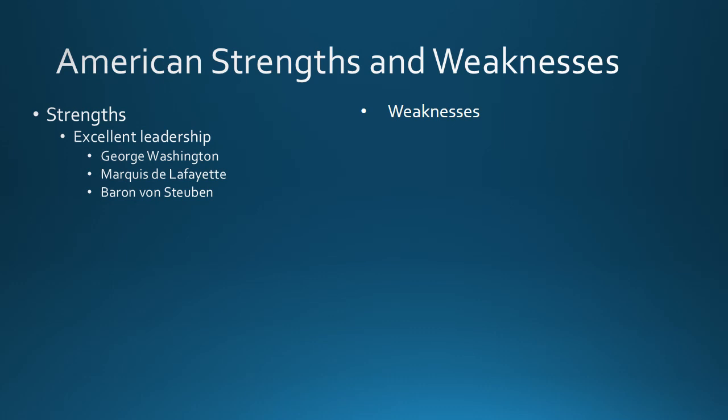Beside Washington, there was a Frenchman named Marquis de Lafayette, who became one of the leading American generals and inspired confidence because he came from France and represented a promise that more French support might come later on. Finally, there was a German general, Baron von Steuben, who took over the task of training the ragtag American troops and turning them into a professional army. He proved quite effective, and by the end of the war the American soldiers were beginning to win battles against the British redcoats.